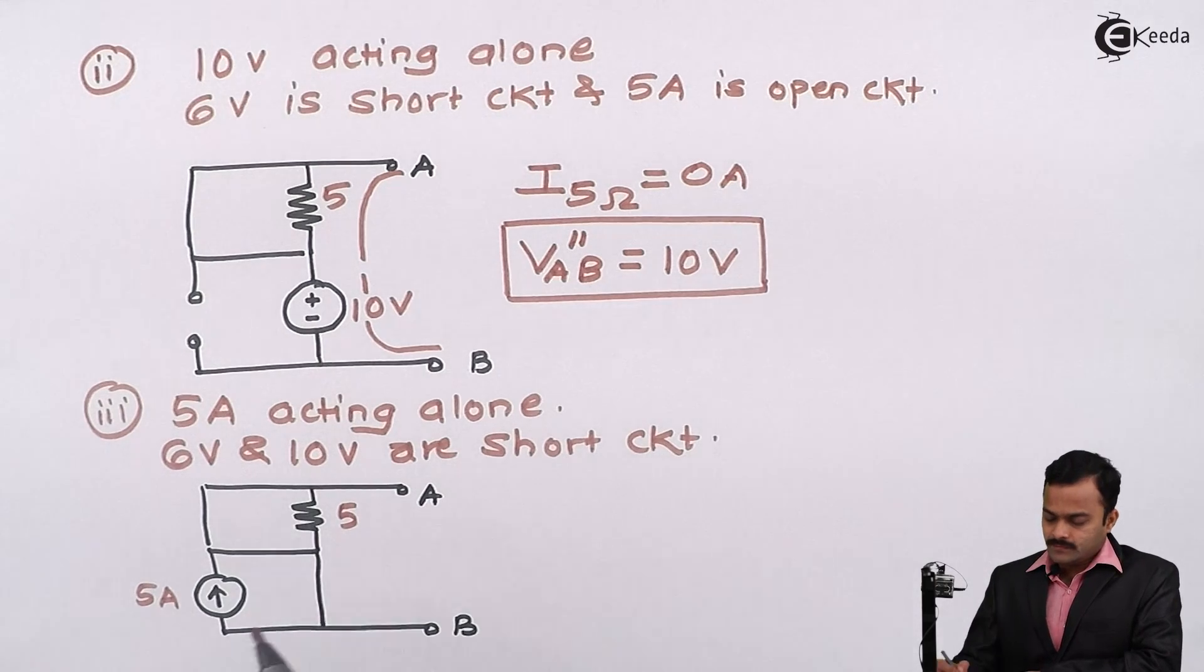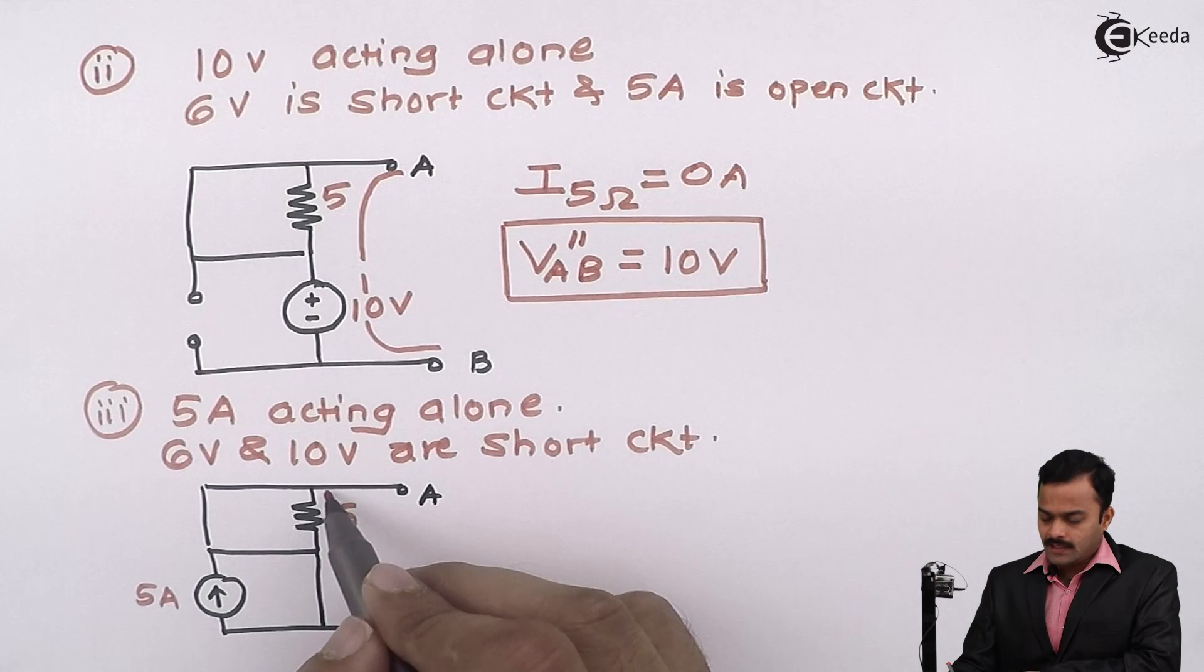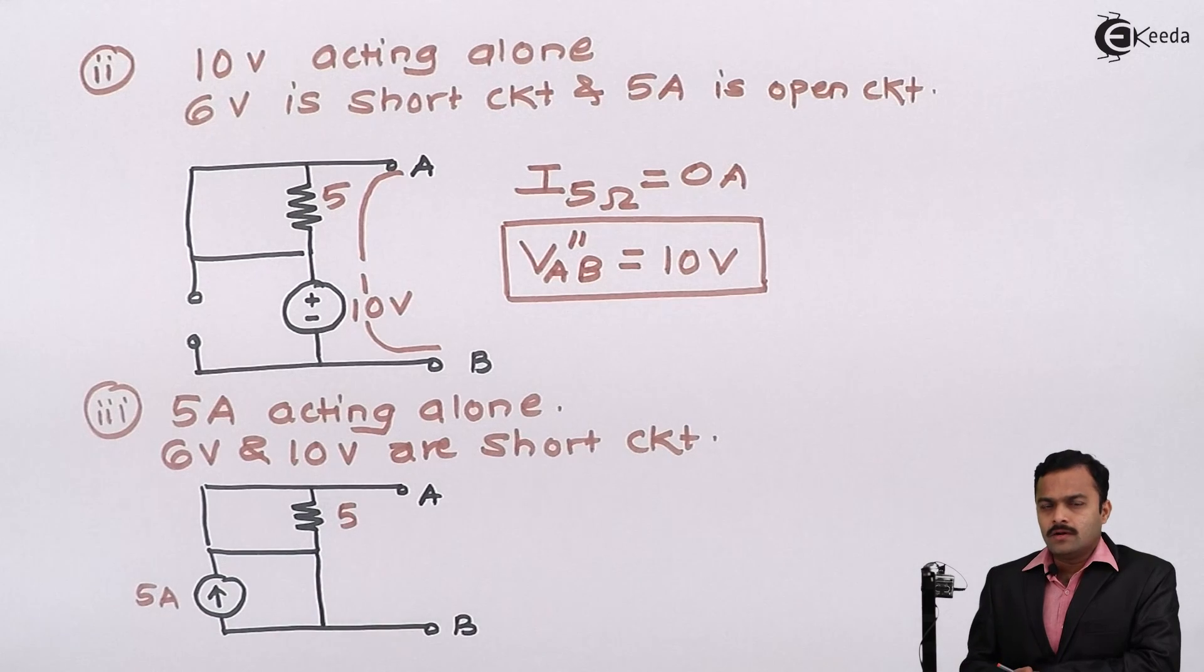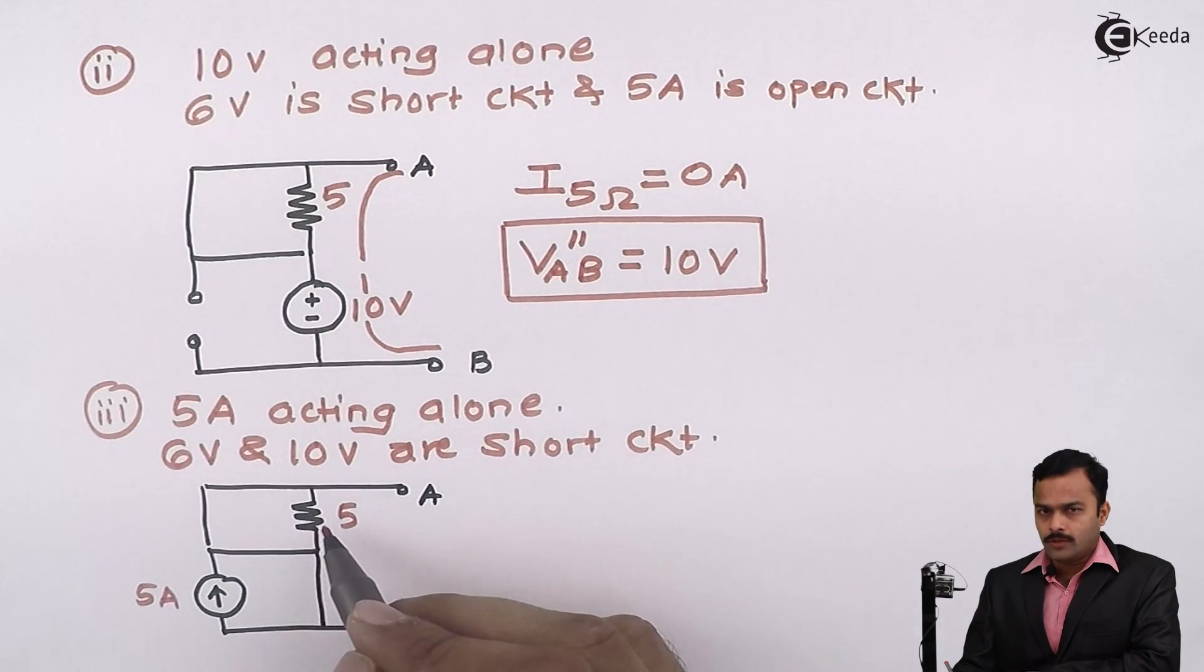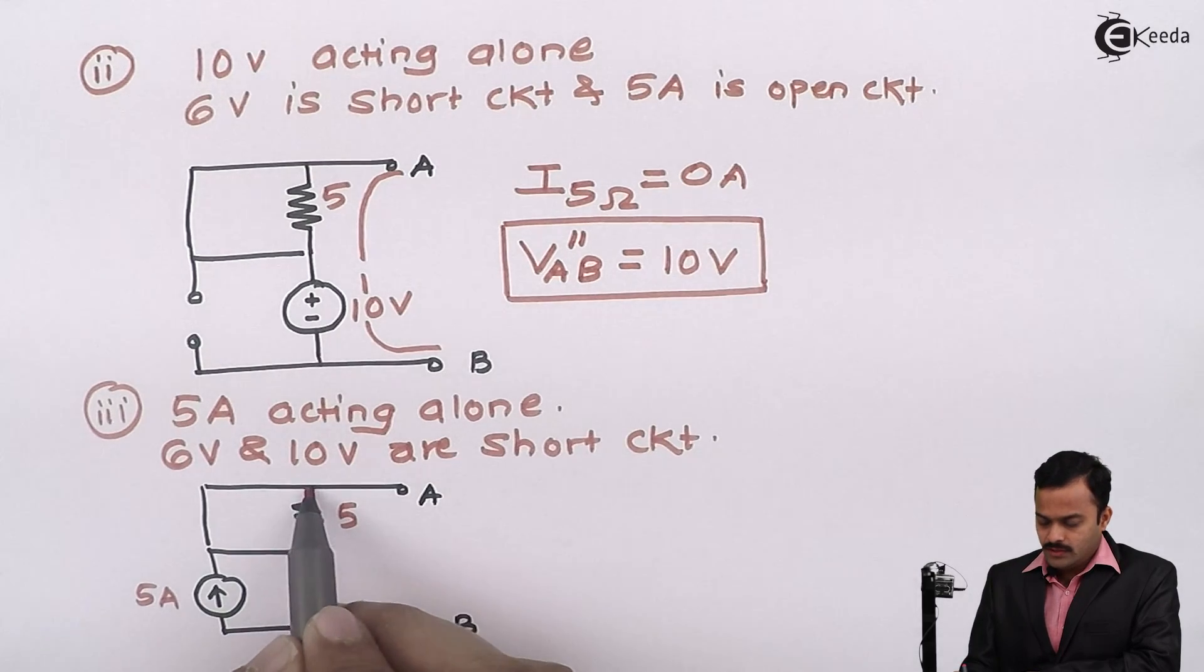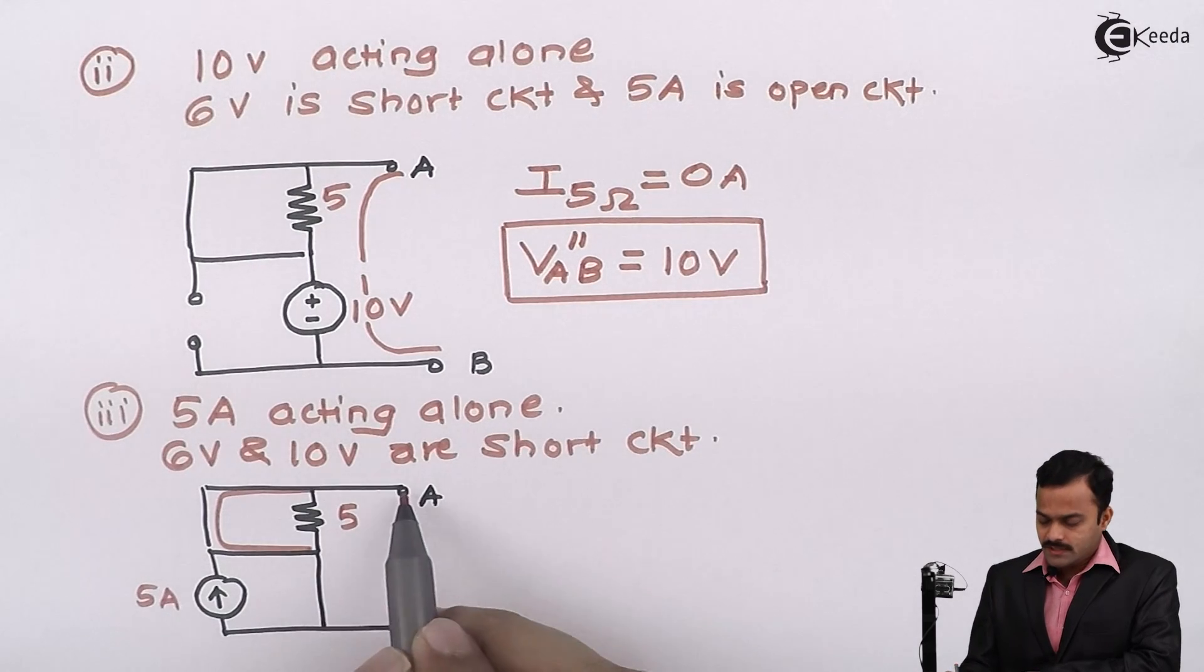Now, in order to get voltage between these two points, I should know current flowing through the 5 ohm resistance as well as number of elements coming in this loop. Here, only 5 ohm resistance will come into the picture, so I should find out what is the current flowing through 5 ohm resistance. You cannot say current flowing through the 5 ohm resistance is 5 ampere because 5 ohm resistance is actually short circuited because of this link.